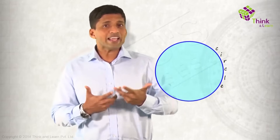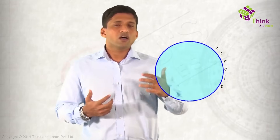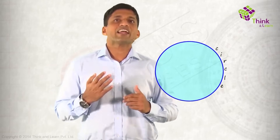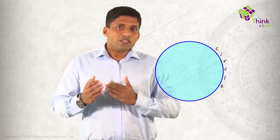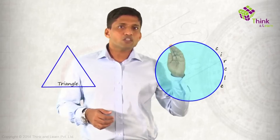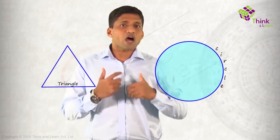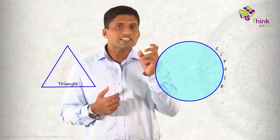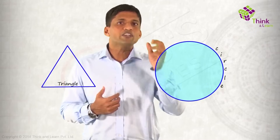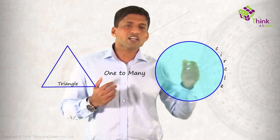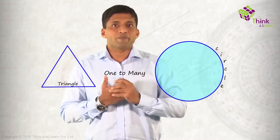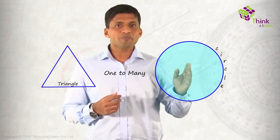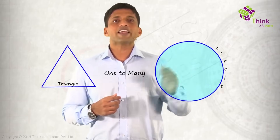So a circle can be taken as the last polygon, if you consider the triangle as the first polygon. Triangle to a circle — how are they connected? In simple terms, they are connected like 'one too many.' Because if you put an infinite number of triangles together, you will end up getting a circle.